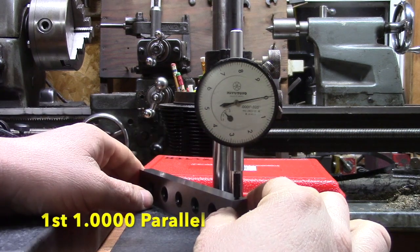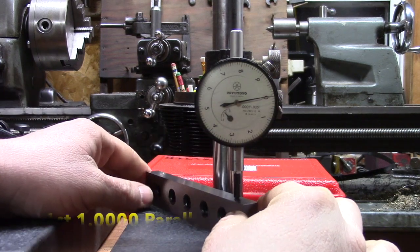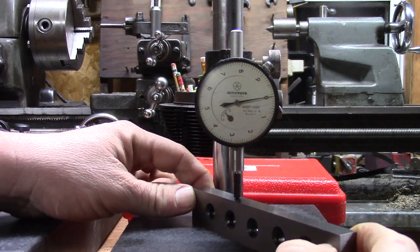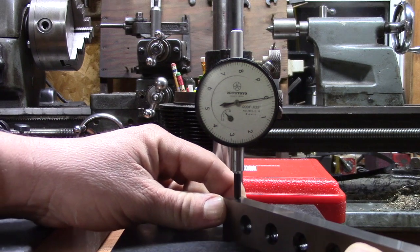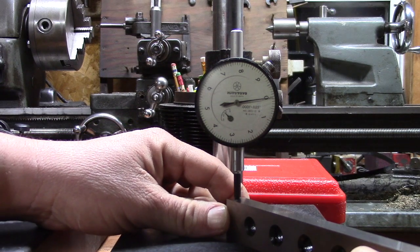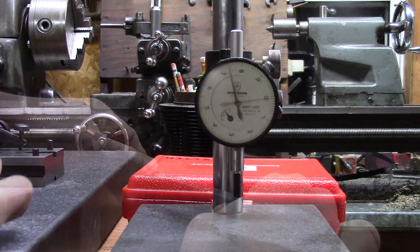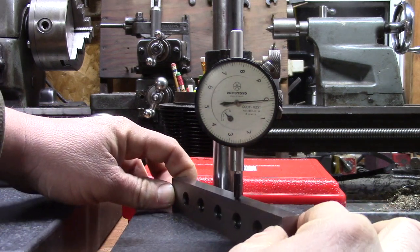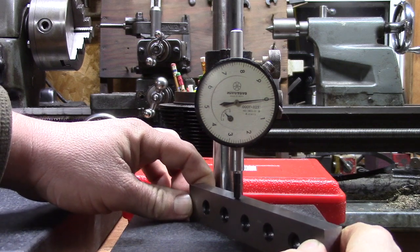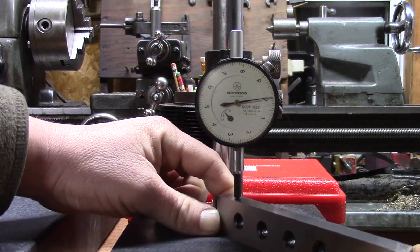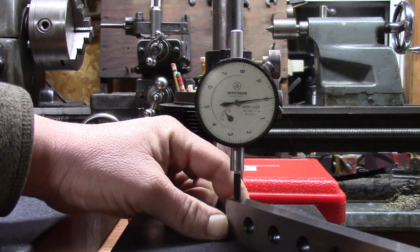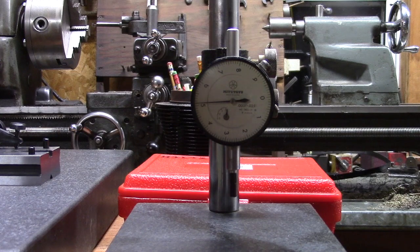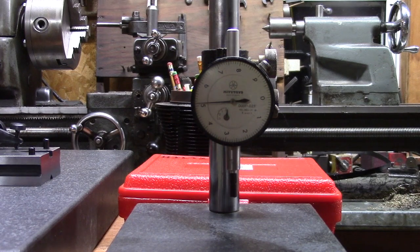Check the first of the one inch parallels. This one has not even one tenth. And let's check the second of the one inch parallels. And we have just over one tenth of total indicator readout there. So all of them passed on this test. Now let's check parallelism with the Brown and Sharp indicator.